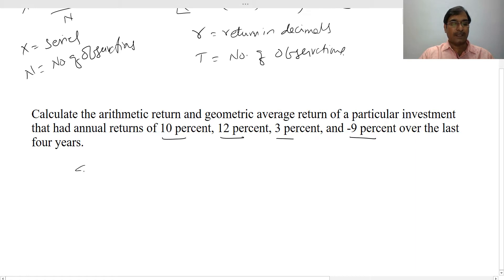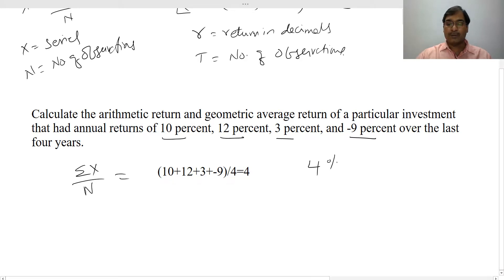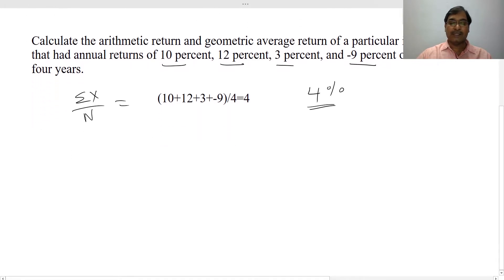Your arithmetic mean is summation of x by n, so this equals to 10 plus 12 plus 3 plus minus 9, and this divided by 4. So your arithmetic mean is 4 percent. Now similarly we calculate the geometric mean.